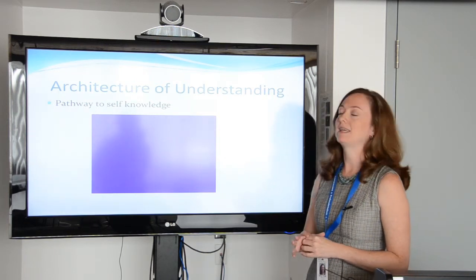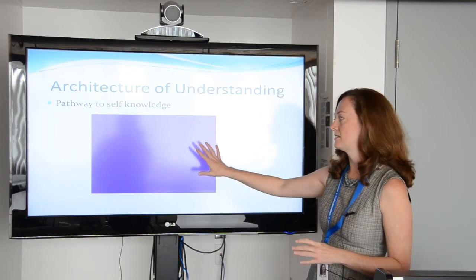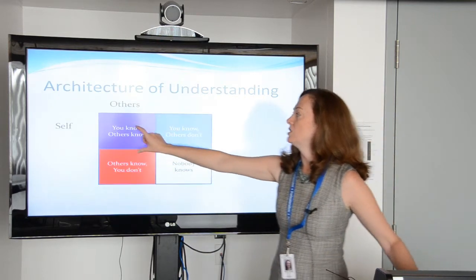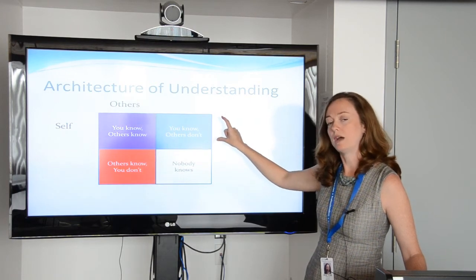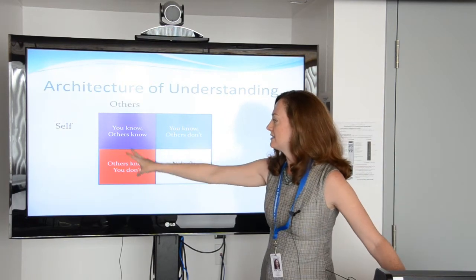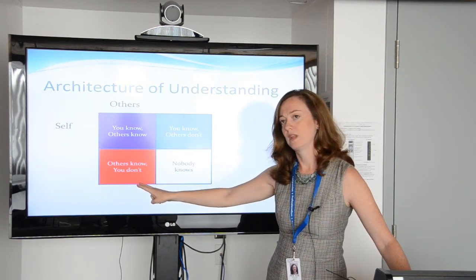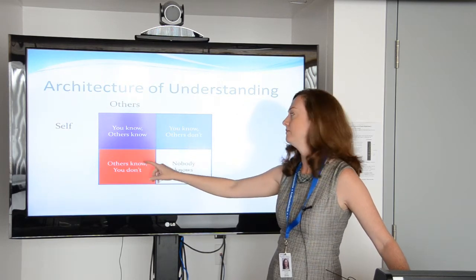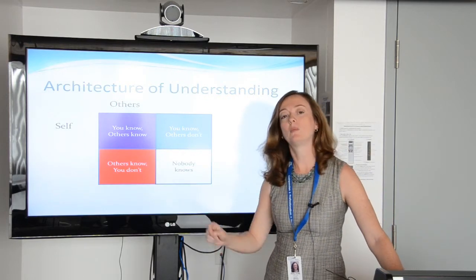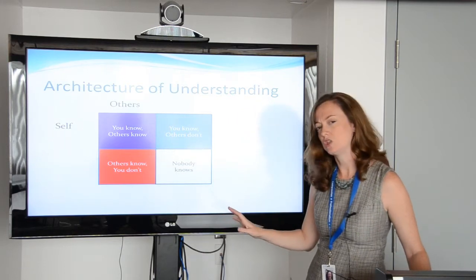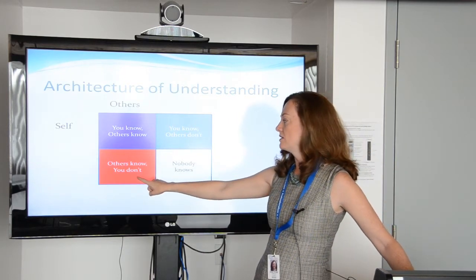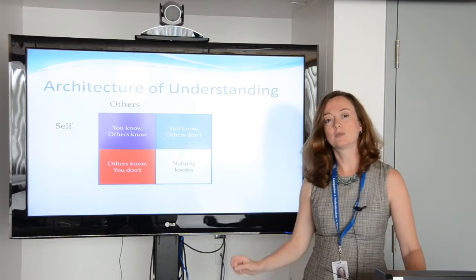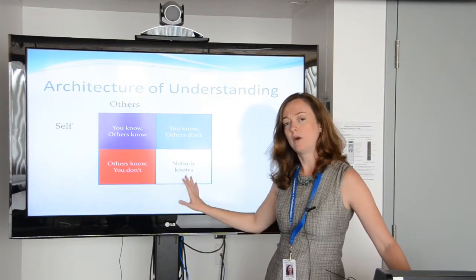This is all pretty abstract, and I'm going to get even more abstract for a few seconds to explain what understanding and the architecture of understanding really means. We're going to use a pathway to self-knowledge as a model. Imagine this purple box on the screen is your self-knowledge. The top part of the box is information you know about yourself. The left-hand side is information that other people know about you. The top left-hand corner is what you know about yourself and others know about you — this is common information. The right-hand box is what you know about yourself but other people don't — your secrets. The bottom left-hand corner is what other people know about you that you don't, which is a little scary. And the bottom right-hand corner is what nobody knows — what you don't know and what others don't know, but it's still part of who you are.